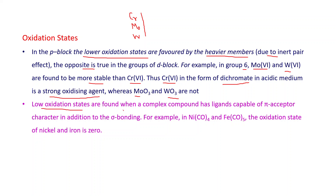Lower oxidation states are found when a complex compound has ligands. This introduces a new term — ligands. More details about ligands and complex compounds will be discussed in the next chapter, that is coordination compounds. Simply stated, ligands are species which are capable of donating a pair of electrons to form coordinate bonds.